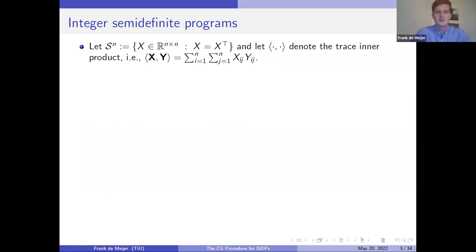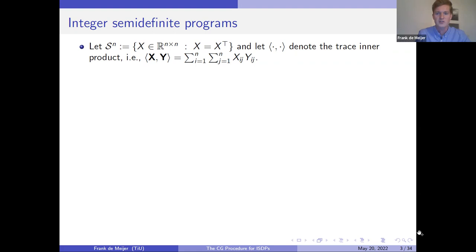Let's move to the formal definition of integer SDPs. We let S_n be the vector space of n-by-n symmetric matrices, and on that vector space we define the trace inner product between two matrices. If we have two symmetric matrices, the trace inner product can be seen as taking the elementwise product and then summing up everything.